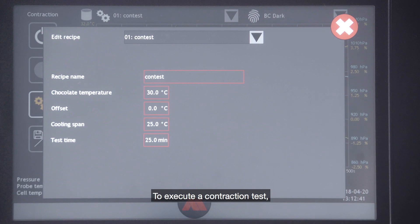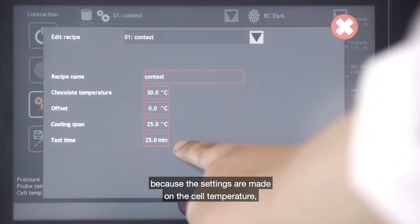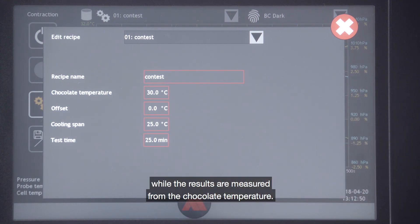To execute a contraction test, the outline for temperature settings must be made. This is a tryout setting outline because the settings are made on the cell temperature while the results are measured from the chocolate temperature.